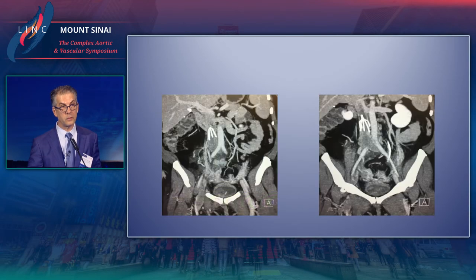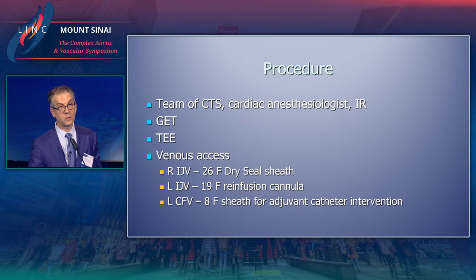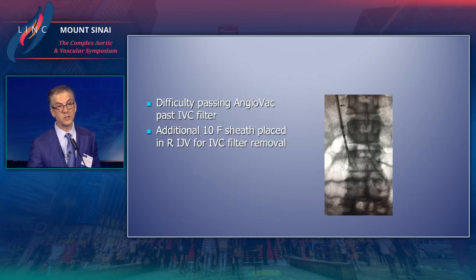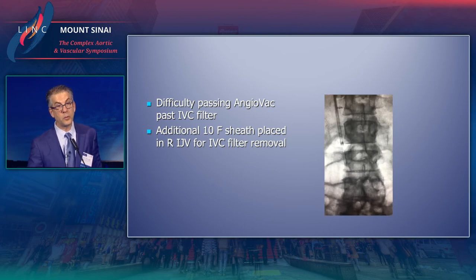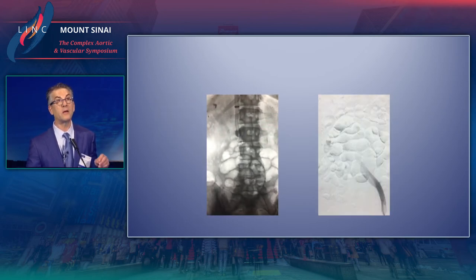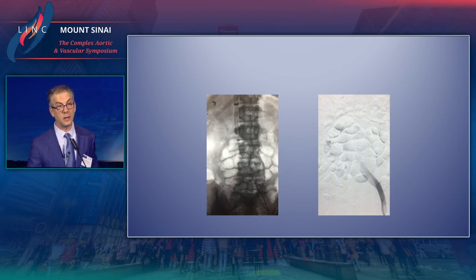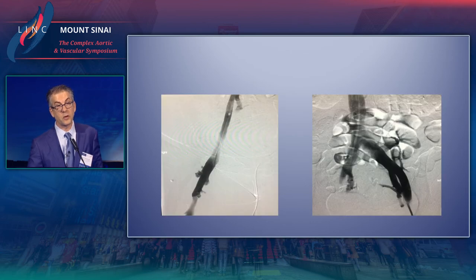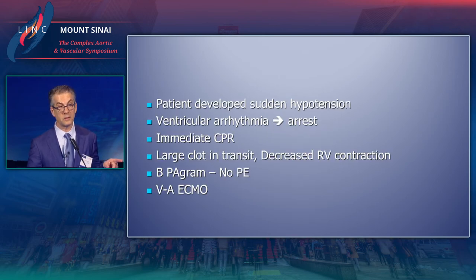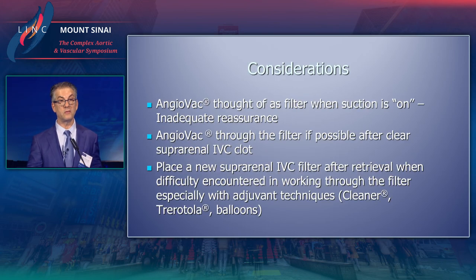One important point about the AngioVac: in one case there was thrombus above the filter, so we used the AngioVac to clean above the filter, but afterward we could not pass the filter and decided to remove it. At the time, we were not routinely placing suprarenal filters. The AngioVac catheter does suction thrombus, but it is not a filter. Thrombus snuck by during the cleanup — it was actually one of our quickest cases — and the patient arrested on the table. We performed immediate CPR, and the patient went on VA ECMO. The lesson: always place a suprarenal filter when using the AngioVac to protect yourself.